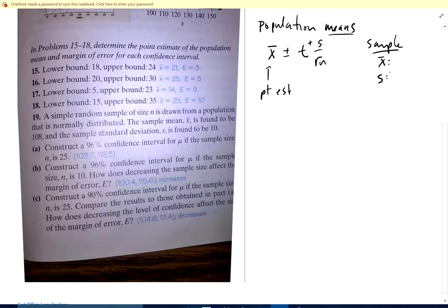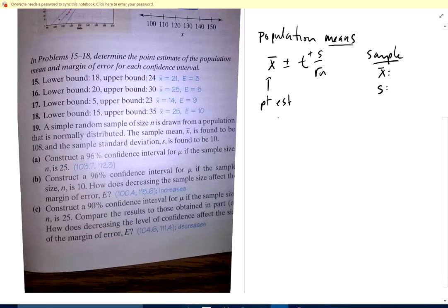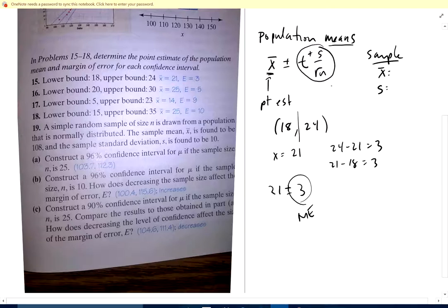For 15, they tell me the lower bound and upper bound, and this is just like we did in the last section for proportions. It goes from 18 to 24. These are my endpoints, so right halfway in the middle is my average x bar. Halfway between 18 and 24 looks like it's 21, because I add 3 and subtract 3. This is my point estimate, this is what x bar is, 21. Then the margin of error would be 24 minus 21 is 3, and 21 minus 18 is 3.